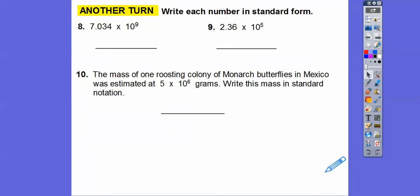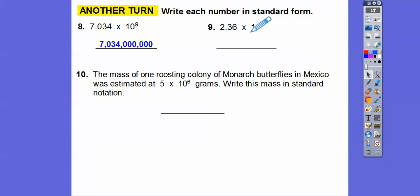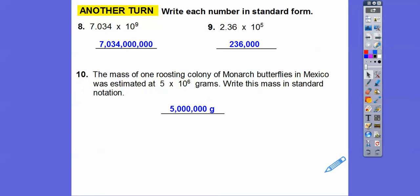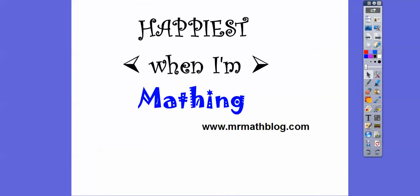Let's wrap this up and write these in standard form. So here we're going to move it nine places to the right — this is going to be three, and we're going to do six more, so there's going to be six extra zeros. And then this one's going to be five, so we go here's two, three more, so we add three zeros. The mass of a roosting colony of monarch butterflies in Mexico was estimated to be 5 times 10 to the 6th grams. So it's 5.0 — we add six zeros — so five million grams is what those monarchs make. I hope that makes sense. Take care.